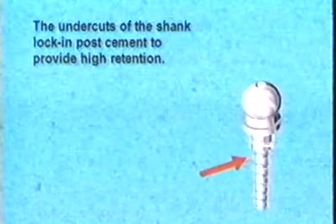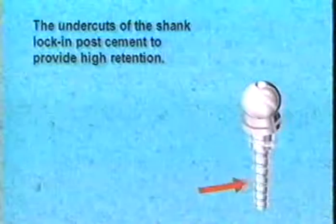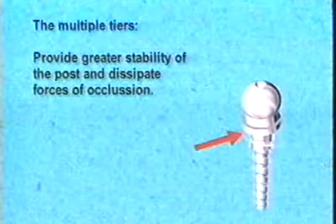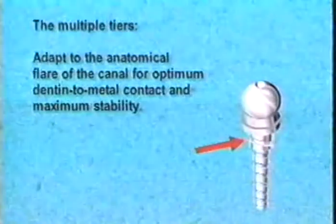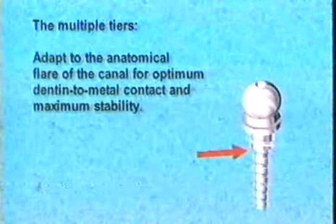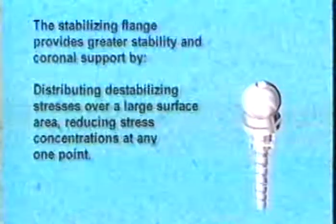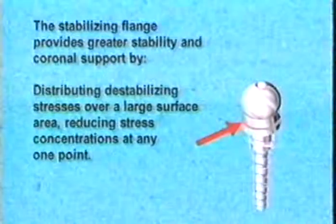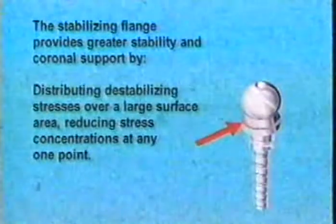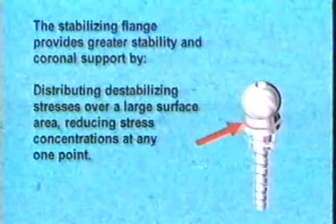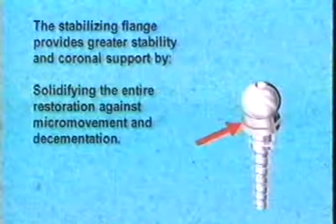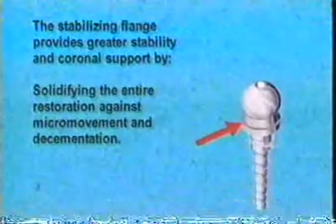The undercuts of the shank lock in post cement to provide high retention. The multiple tiers provide greater stability and dissipate forces of occlusion. The post adapts to the anatomical flare of the canal for optimum dentin-to-metal contact. The stabilizing flange provides greater stability and coronal support by distributing destabilizing stresses over a large surface area, reducing stress concentrations and solidifying the entire restoration against micro-movement and decementation.